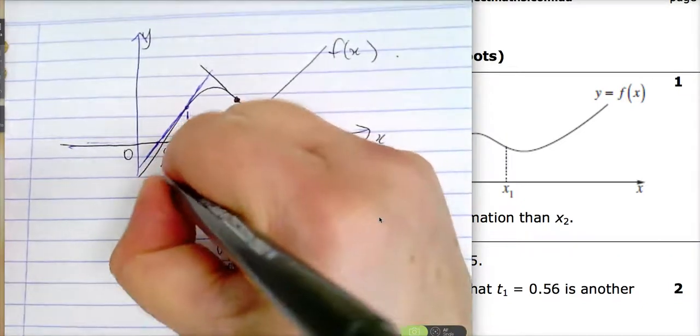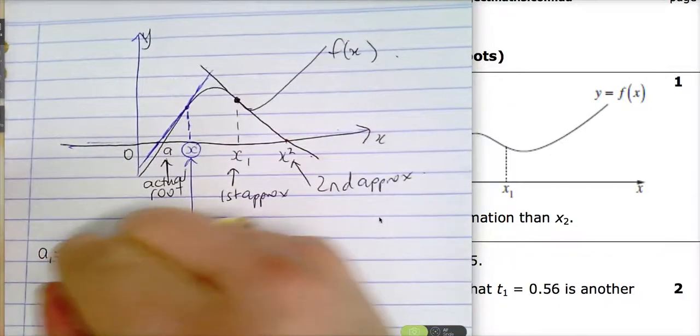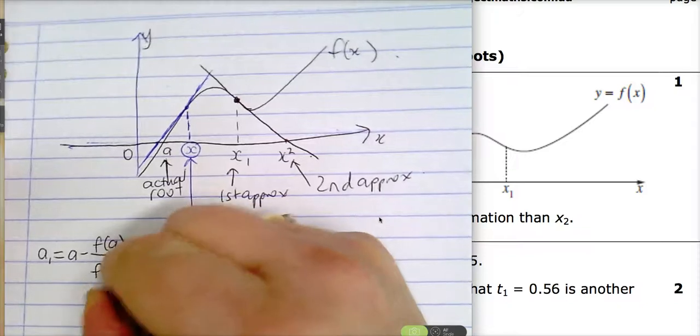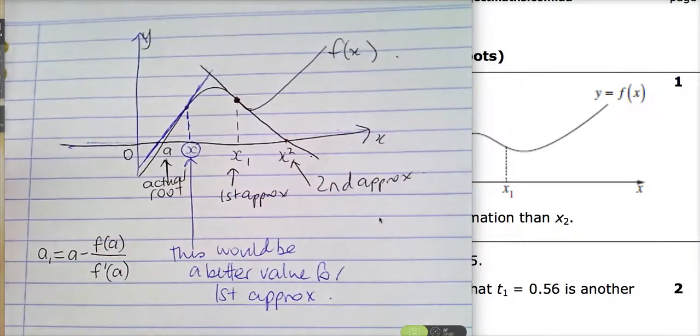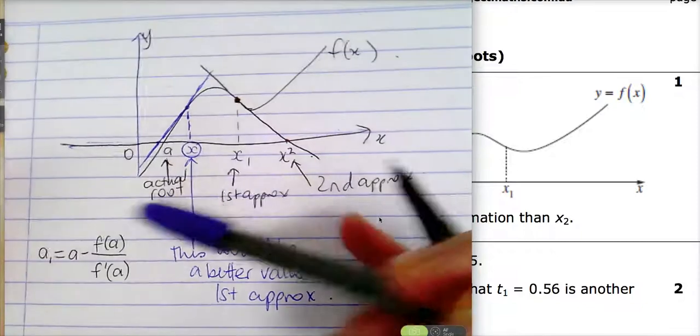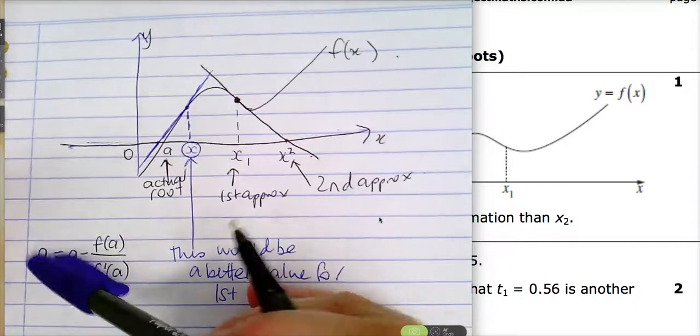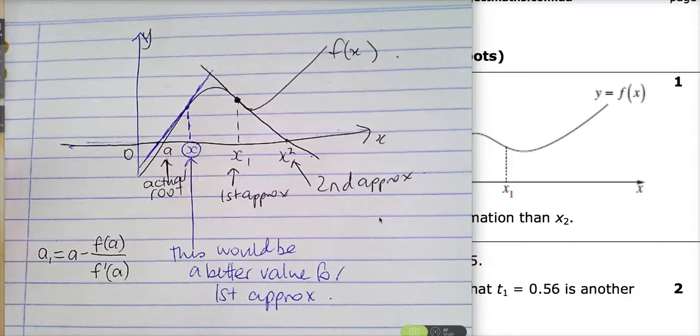Okay, so you need to know what the formula is for Newton's method and it's a1, the first approximation is a minus function of a over f dashed a. And when I looked at in the video, we looked at the proof of this rule. You're actually just finding all that the proof, all that this rule is, is the equation of the tangent at your first approximation and it's actually working out the x intercept of that equation of tangent. That's all that that formula is, is the x intercept of the equation of the tangent to the curve at your first approximation.